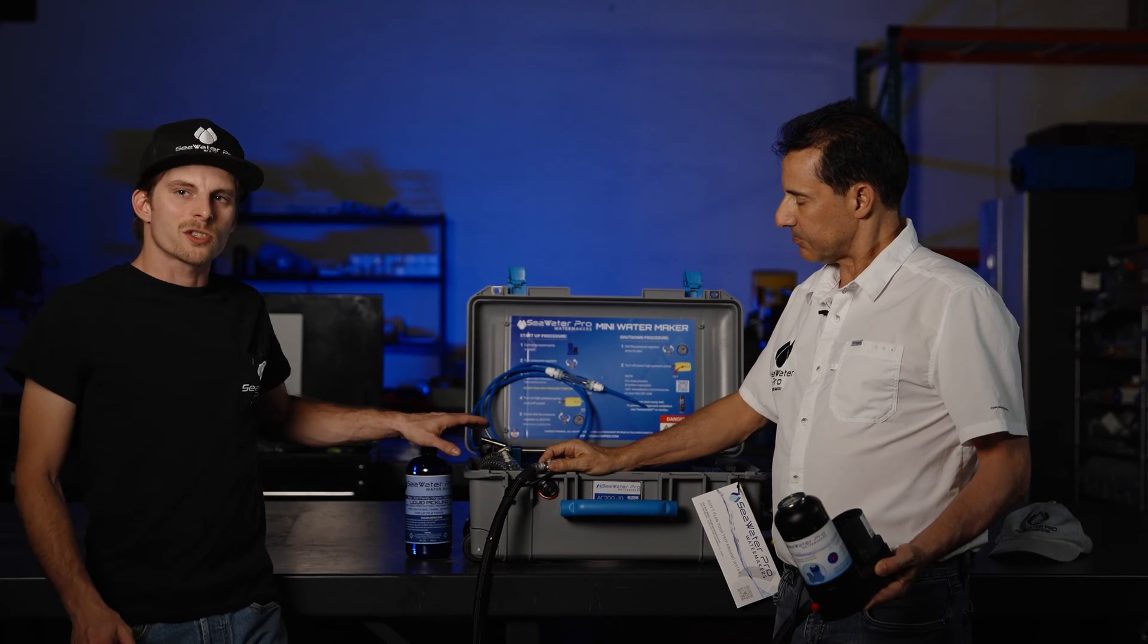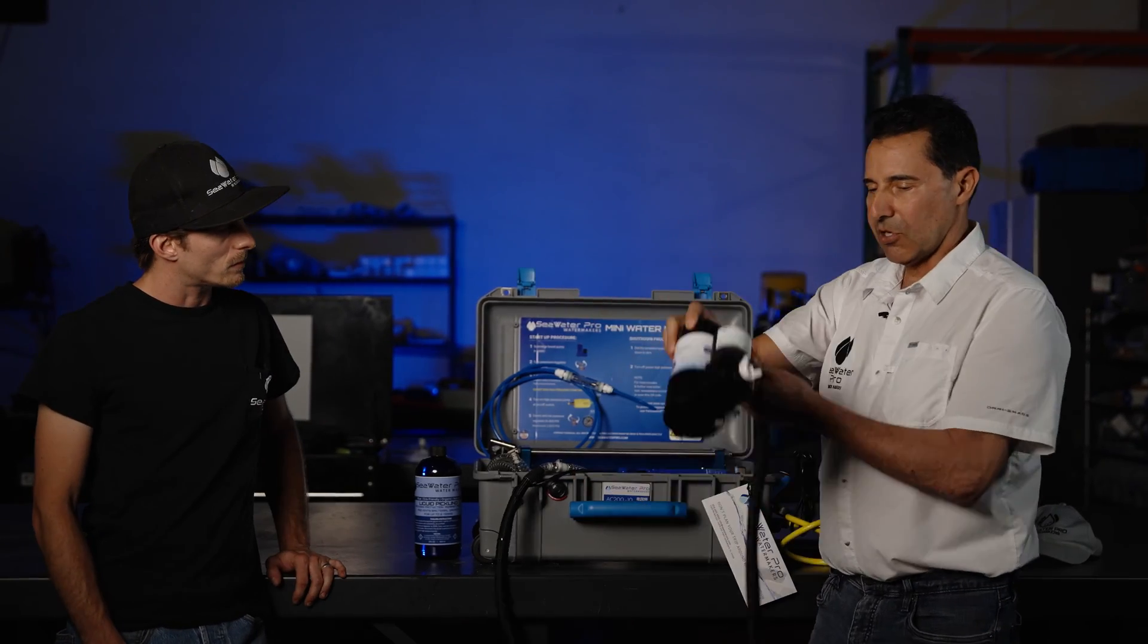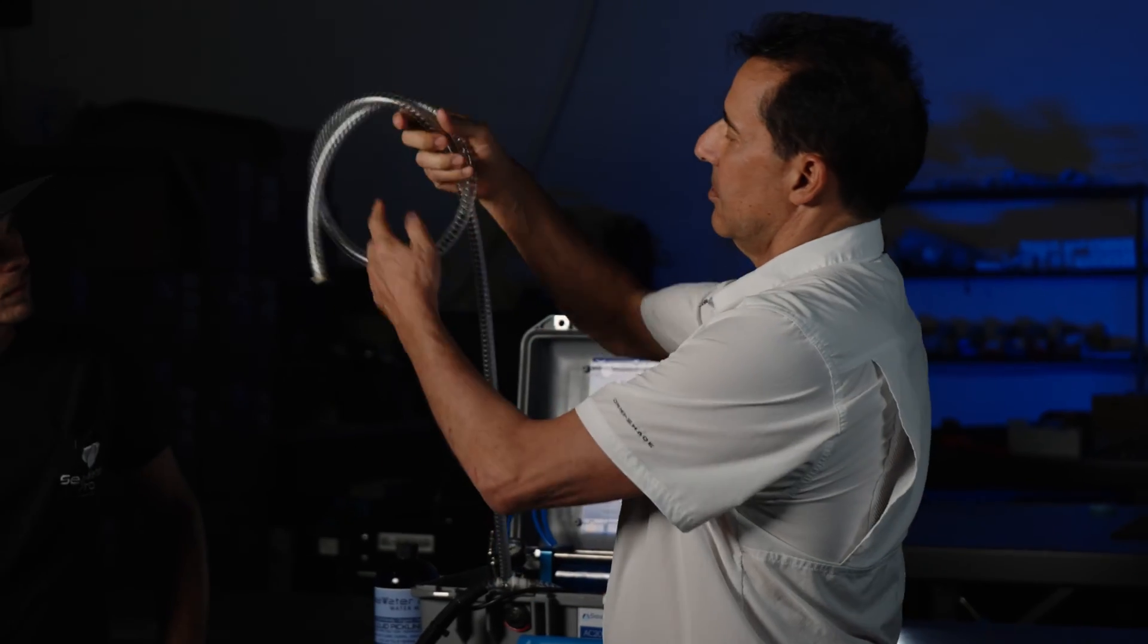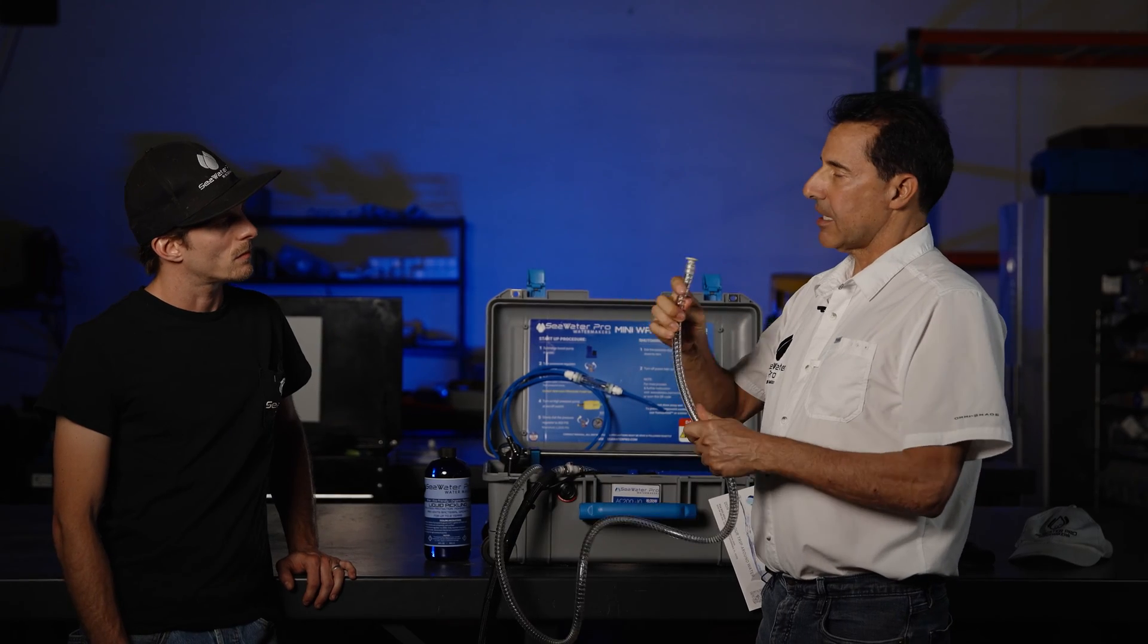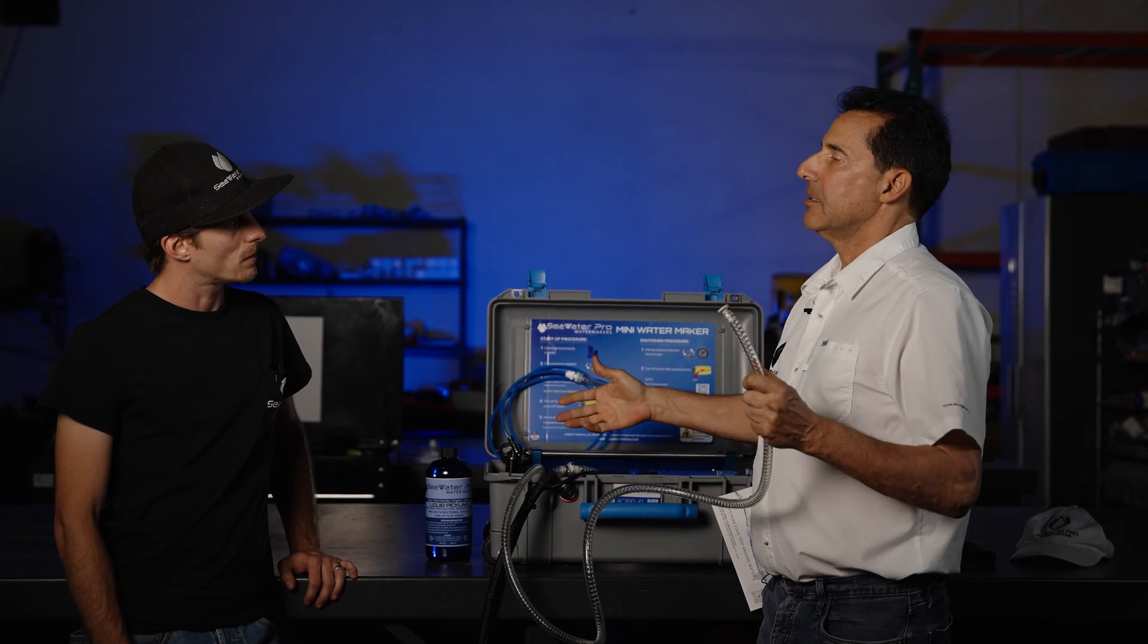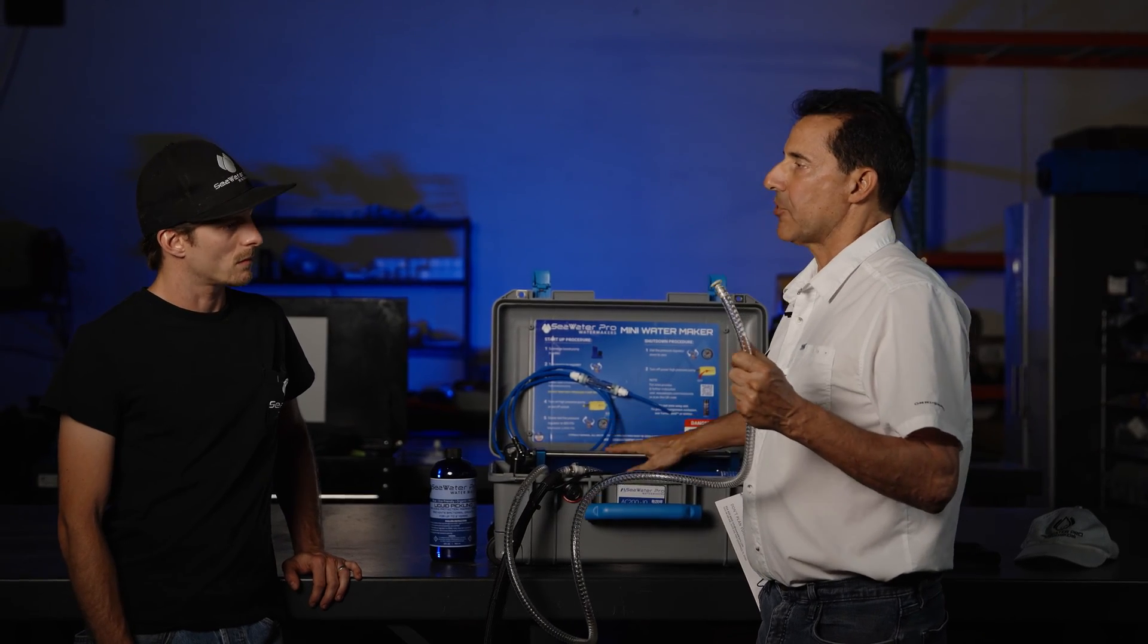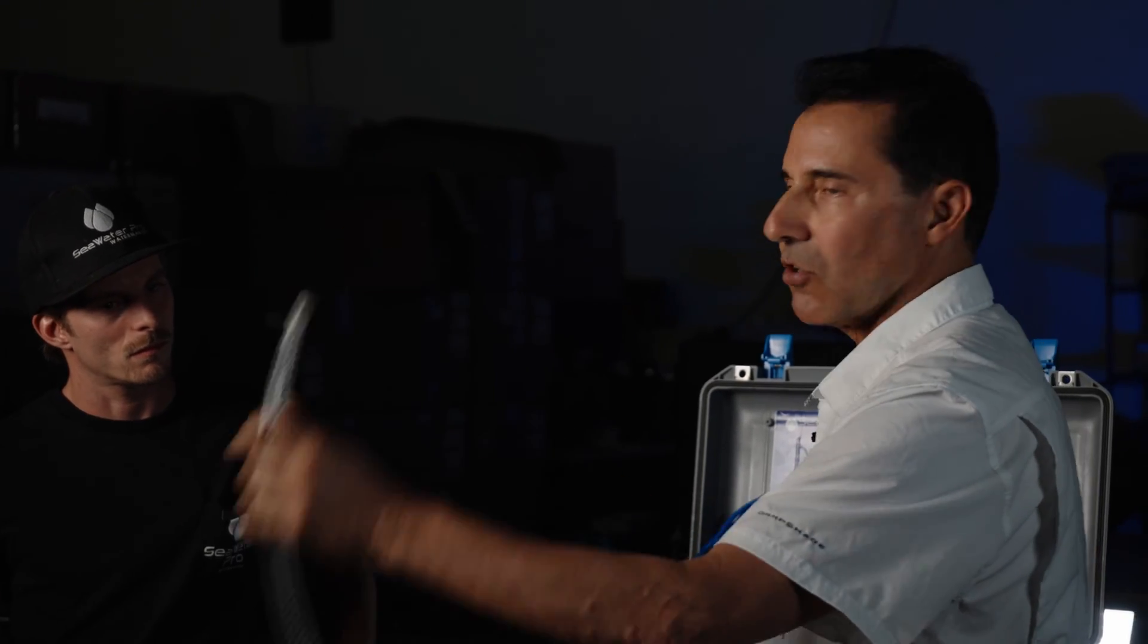So what is the startup procedure for this unit? Startup is very simple. First, we drop this in the ocean. Second, we drop this water overboard. This is the line that carries the brine. Brine is really the salt. Instead of accumulating the salt in the membranes we are actually separating it and we're getting rid of it with this hose overboard. So this hose needs to go overboard as well.